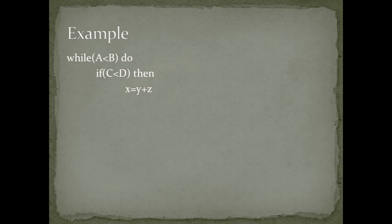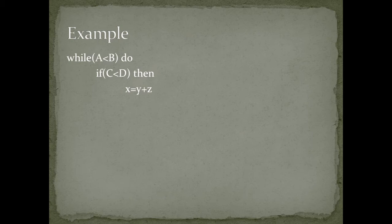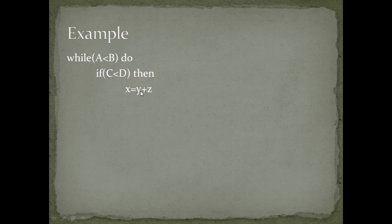As you can see on the slide, we consider a while loop: while a less than b do. Inside this while loop, we write one conditional statement: if c less than d, then x equal to y plus z. That means if the value of c is less than d, then control goes to the statement x equal to y plus z. These two instructions are inside this while loop and will be executed until the value of a is less than b. Once a is greater than or equal to b, control comes out from this loop. So we need to write this loop in terms of 3AC form.